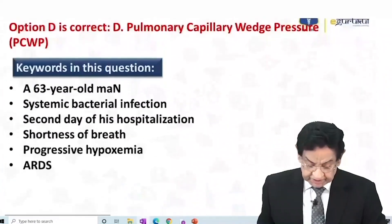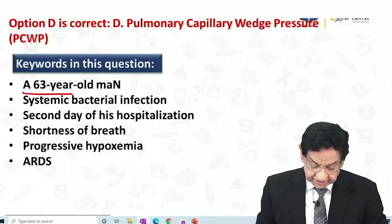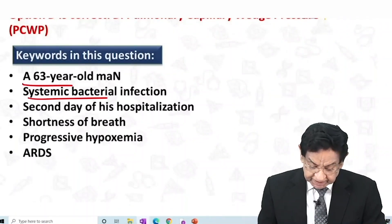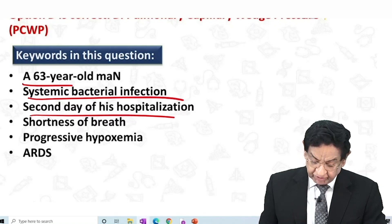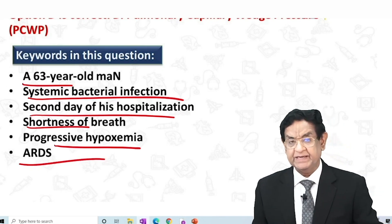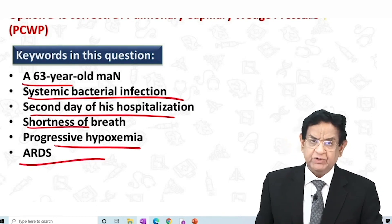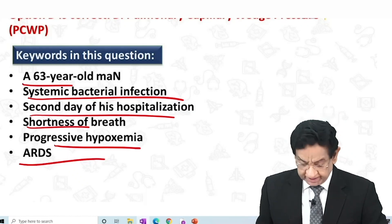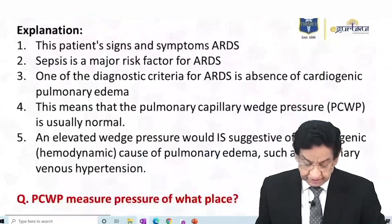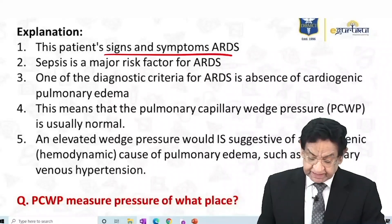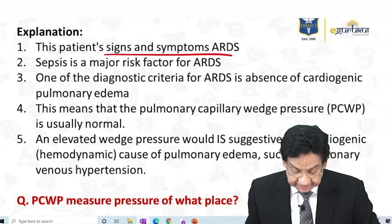The keywords in this case are: 63-year-old elderly person, bacterial infection, 2nd day of hospitalization, shortness of breath, progressive hypoxemia. The question tells us we are dealing with a case of ARDS. These patients have signs and symptoms of ARDS.